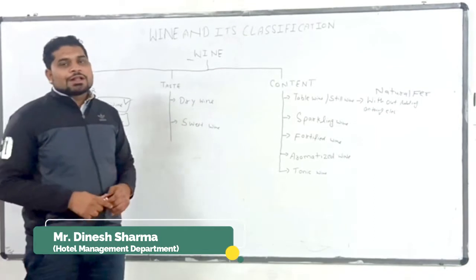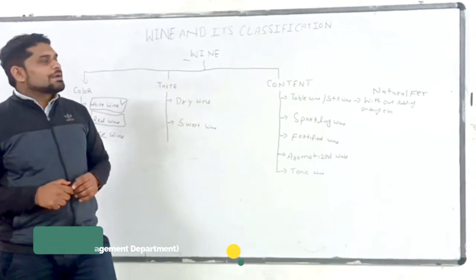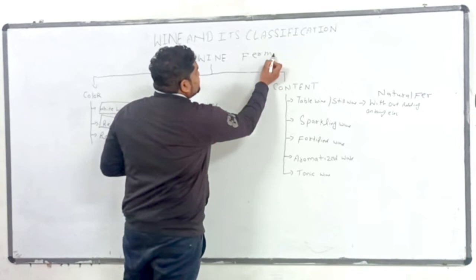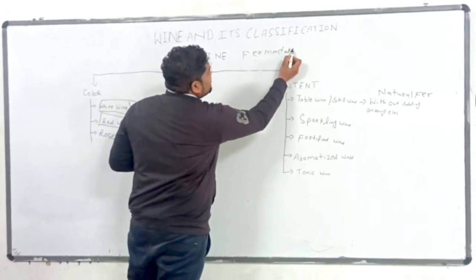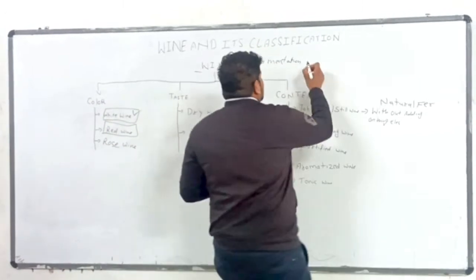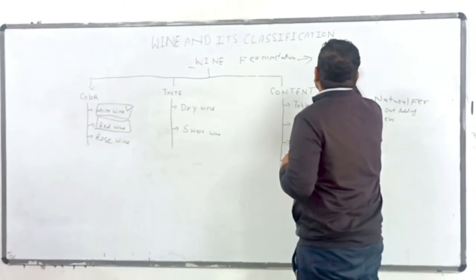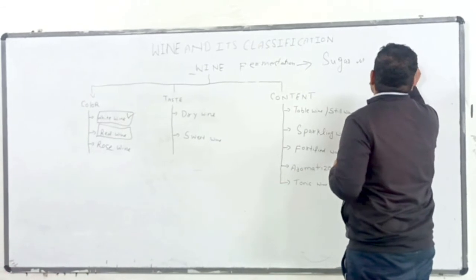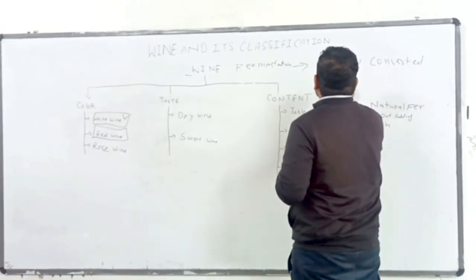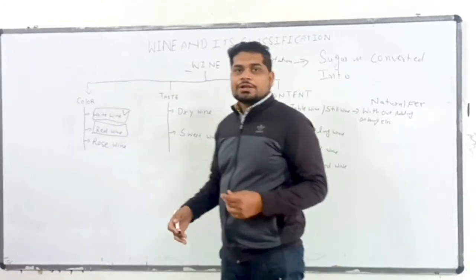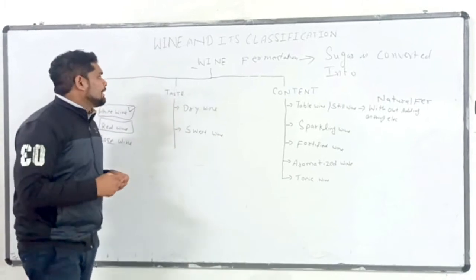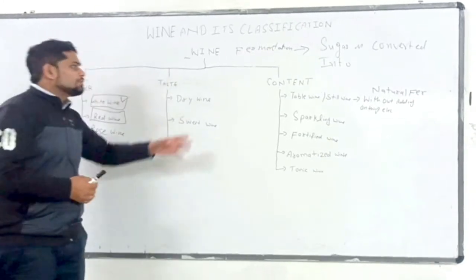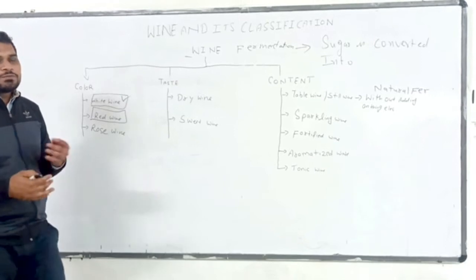Wine is a type of alcoholic beverage which is made from fermentation process. In this fermentation process, the sugar is converted into ethyl alcohol with the help of yeast. Only 40% alcoholic content is produced by the yeast when the level of CO2 is increased.